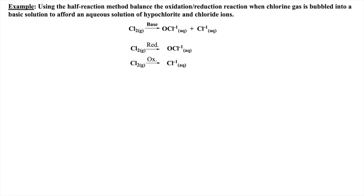The element being reduced — chlorine — needs to be balanced. Now let's balance the oxygen atoms by adding the appropriate number of water molecules to the reactant side of the equation. Now we have to equate the number of hydrogens on both sides by adding the appropriate number of protons to the product side. At this point, we calculate the overall charge on both sides. The only way to make these charges balance is to add two electrons to the product side.